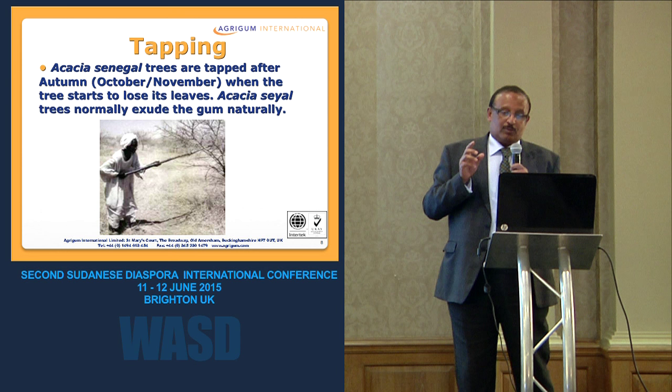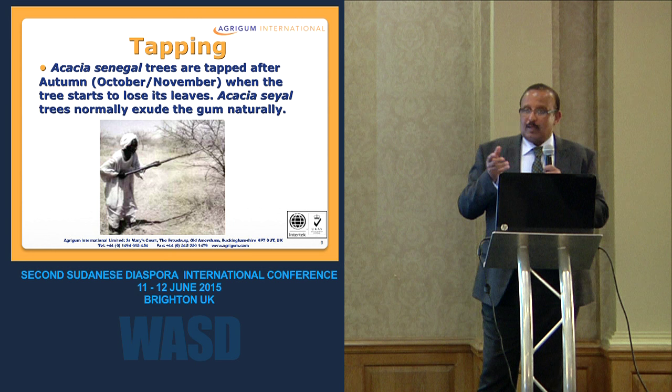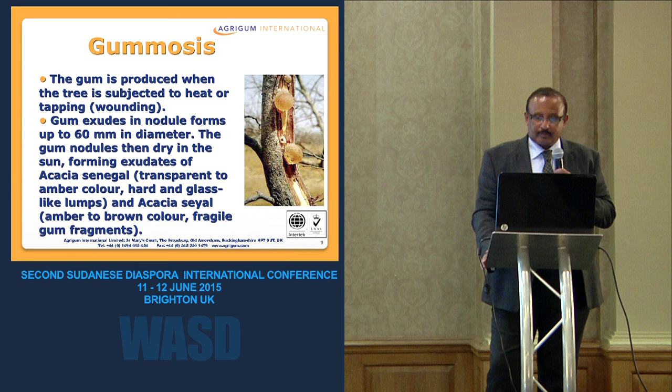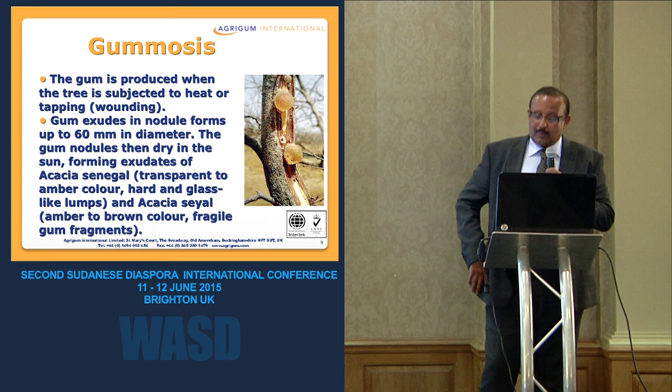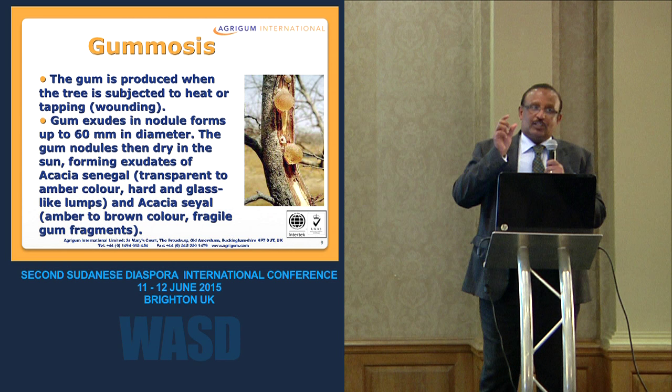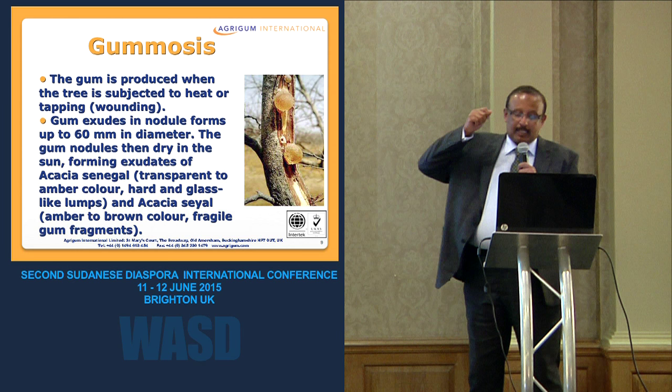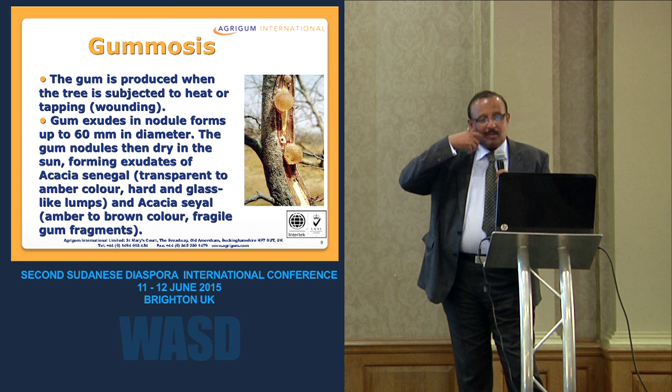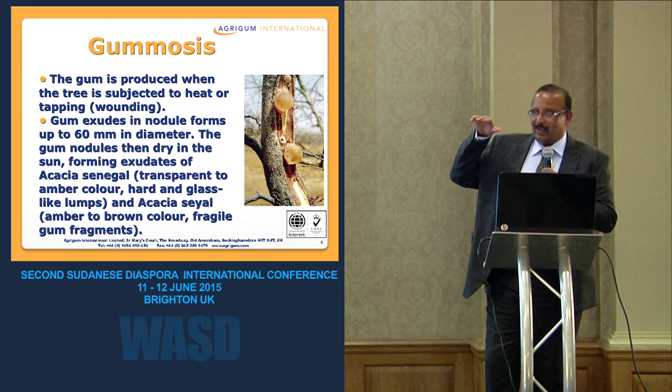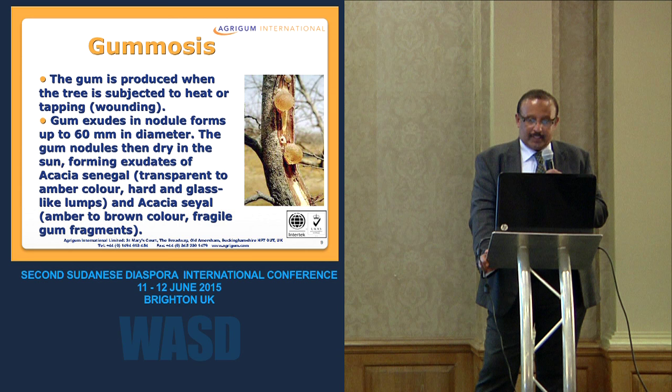The timing of the tapping is very crucial. Acacia Sayal usually produces gum naturally, although some modern practices now involve tapping it as well. This shows how the Senegal gum looks — nodules on the bark. The tapping uses a traditional tool to peel the bark, and there is also a modern sharp spear tool called in Sudanese a 'sonki', which is now being used more commonly.